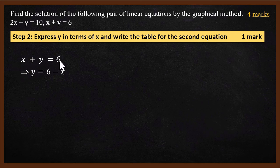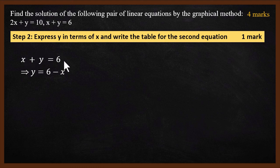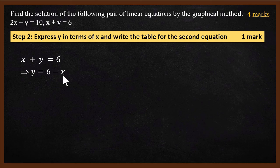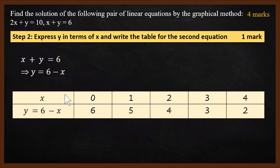The second equation is x plus y equals 6. To get y equals something, we move x to the right-hand side. The sign changes to minus, so y equals 6 minus x. Next, we read the table by putting in different values of x and finding the values of y.